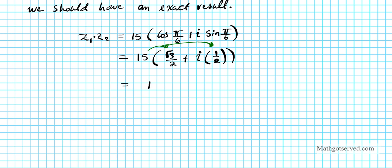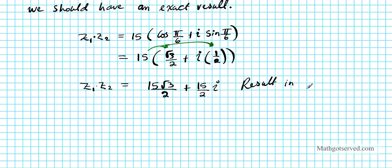Now we'll distribute 15 to the real and imaginary parts, giving us 15 root 3 over 2 plus 15 over 2 times i. So this is the product in rectangular form — the a plus bi form.